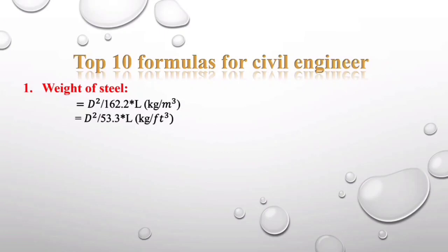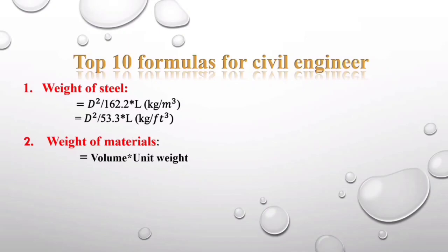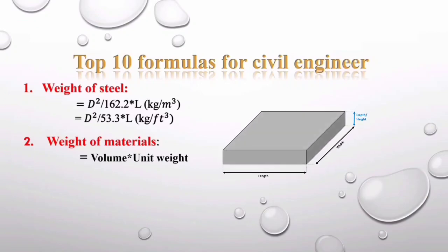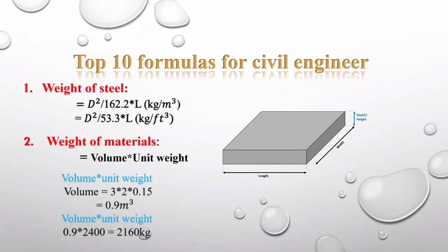The next formula is for finding the weight of any material. You multiply volume by unit weight or density. Whenever you are finding the weight of any construction material — concrete, bricks, soil, steel, wood, sand, plaster, glass — you can find its weight using: weight = volume × density. For example, consider a concrete slab where we need to find its weight.